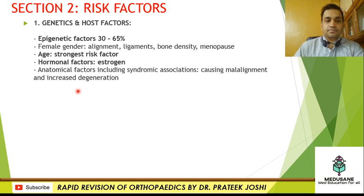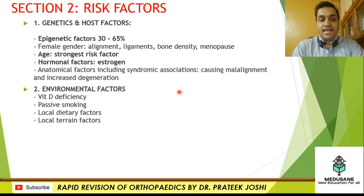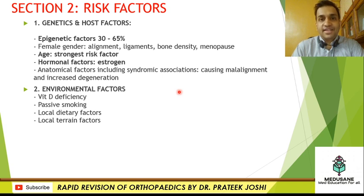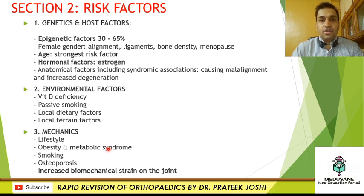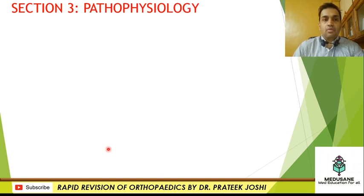Environmental factors such as vitamin D deficiency, passive smoking, deficiency of vitamin D and calcium in the local diet, and vegetarian diet predominance contribute to risk. Local terrain factors are also relevant — patients who walk on rocky or irregular terrain subject their joints to greater biomechanical stress compared to those with sedentary lifestyles or those walking on plain ground. Biomechanical lifestyle factors include obesity, metabolic syndrome, smoking, osteoporosis, and any factor leading to increased biomechanical strain on the joint — all posing a risk to osteoarthritis, especially of the knee.